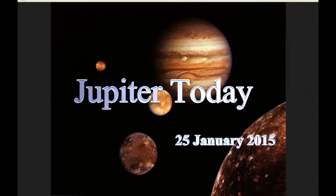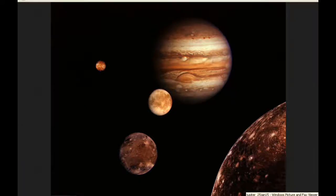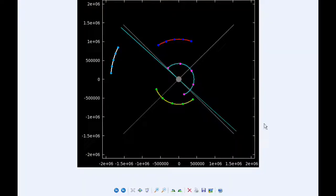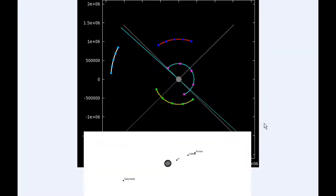This is Jupiter Today for the 25th of January 2015. Jupiter Today is a daily podcast focusing attention on the dynamic Jupiter system for the purpose of monitoring activity. At zero hours UTC, Io begins the day in quadrant 4 heading east, moving behind Jupiter.